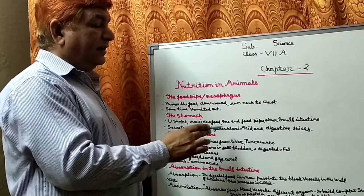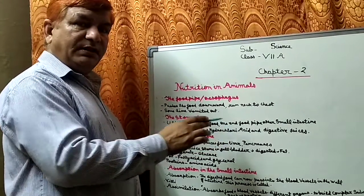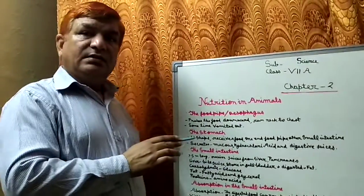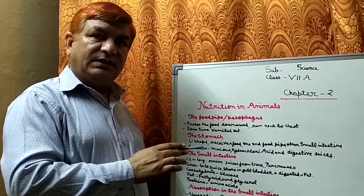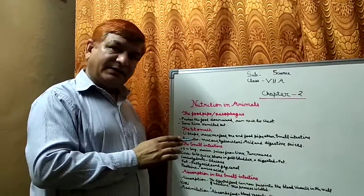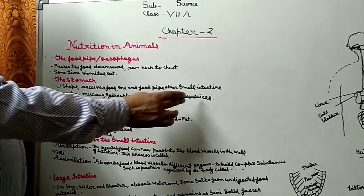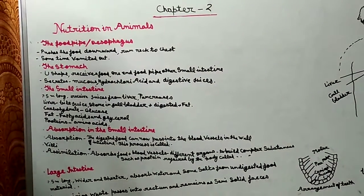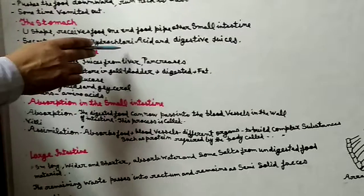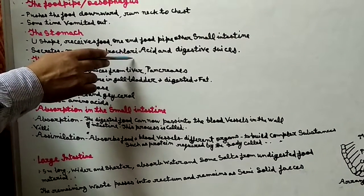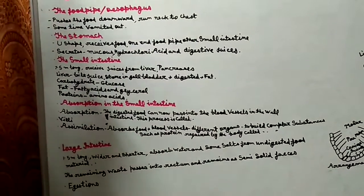Hydrochloric acid milta hai food mein, aur yeh food ko acidic banata hai. Jis kaaran bhojan mein bahut saare harmful bacteria jo hote hain, wo nusht ho jaate hain - it kills different types of harmful bacteria. Aur acidic medium ki wajah se digestive juices properly function karte hain. So stomach secretes mucus, which protects inner lining; hydrochloric acid, which makes food acidic and kills germs; and produces digestive juices.